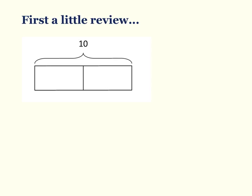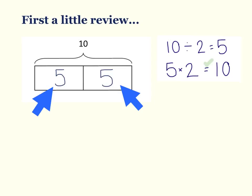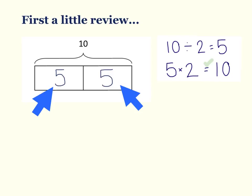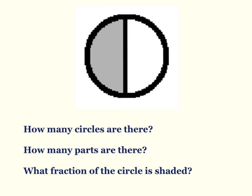We can check our work by multiplying five by two — and that equals ten. Here's our next review question. We have a circle instead of a tape diagram — same concept, different shape. It asks us how many circles are there. Just one, right? It may be divided, but it's still one whole circle. The next question is how many parts are there? It's still one whole, but we have two separate parts because of the line dividing it in the middle.